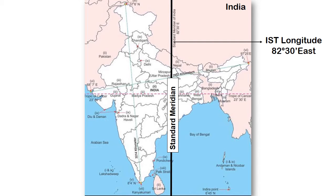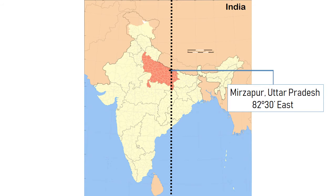The Standard Meridian of India is 82 degrees 30 minutes East, at Mirzapur in Uttar Pradesh. It was taken as the standard meridian because it splits the country into closely two equal parts — it was accepted as it lies almost in the middle and runs through the center of the country.